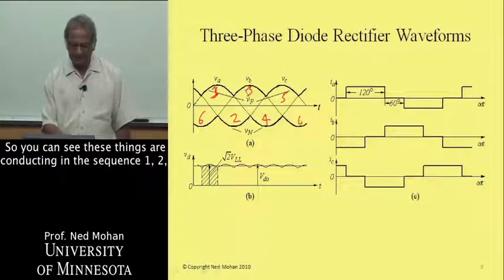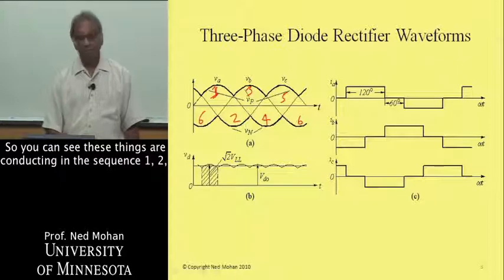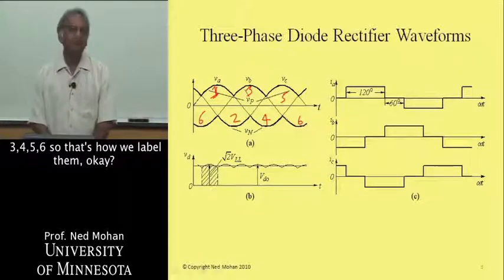You can see that these things are conducting in the sequence one, two, three, four, five, six. So that's how we label them.